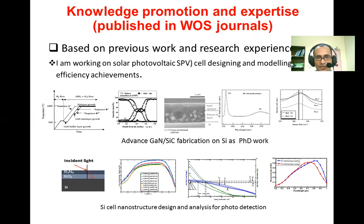In that process, the MOCVD system was introduced to develop the interlayer between silicon and gallium nitride. Eventually, gallium nitride was developed using gallium arsenide and silicon carbide interfaces. The gallium arsenide interface was eventually transferred to porous gallium nitride, as you can see here.